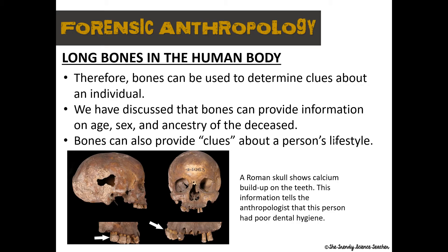Here is an image of a Roman skull. Anthropologists were able to determine clues about this person based on their teeth — they noticed a lot of calcium buildup, which gave a clue as to the way this person lived. They determined this person had poor dental hygiene. So we know the skull, the pelvic bone, long bones, and skeletal remains in general can be used to identify a biological profile — such as sex, age, height, or ancestry — but they can also be used to determine how the person lived or how the person died.